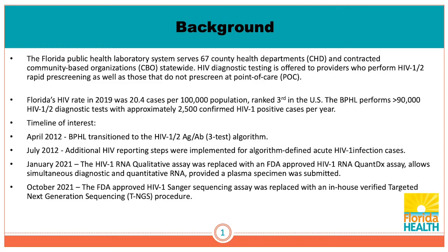Jumping to 2021, even during the middle of the COVID-19 pandemic, we were able to do some replacement of long-emplaced assays in our algorithm. The HIV-1 RNA qualitative assay was replaced with the HIV-RNA QuantDX diagnostic assay, which allows simultaneous diagnostic and quantitative RNA provided a plasma specimen is submitted. And then in October of last year, we replaced our HIV-1 Sanger sequencing assay with an in-house verified target next-generation sequencing procedure.